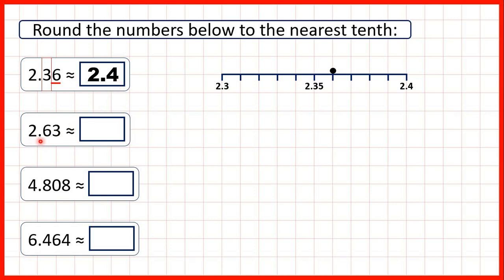Now we have 2.63. To round to the nearest tenth, we find the tenths digit and look to the right — so we look at our hundredths digit. We have a three, and when we have four or less, we round down. That means the tenths digit stays the same, so we have 2.6.